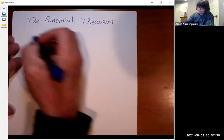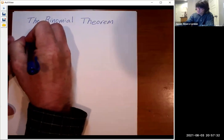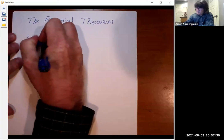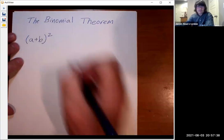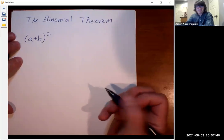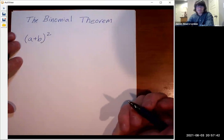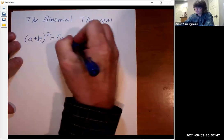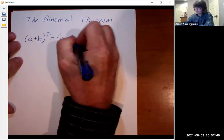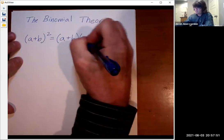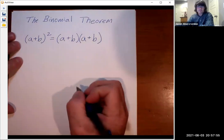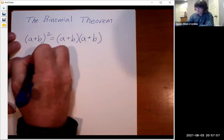So for starters, I'm going to just write down (a+b)². And before we do the binomial theorem, I'm just going to do this the good old regular way with the distributive property. I'm just going to multiply this out. (a+b) times (a+b). And we're going to use FOIL. First, outer, inner, last.